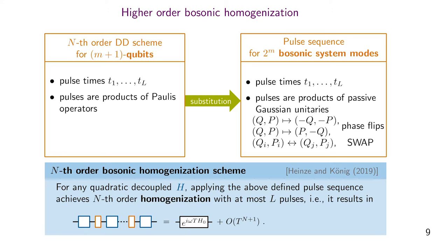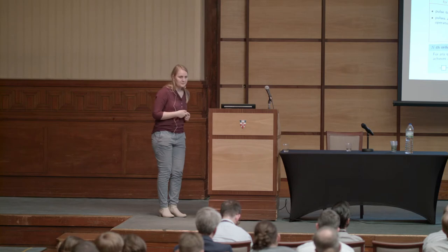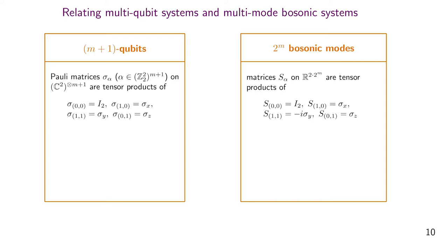Our result is that for any quadratic already-decoupled Hamiltonian, this substitution results in a pulse sequence for 2^M bosonic modes that achieves homogenization with the same number — or even fewer — pulses than the corresponding qubit scheme. We show this by establishing a relation between multi-qubit and multimode bosonic systems, which may also be useful for lifting other protocols from one setting to the other.